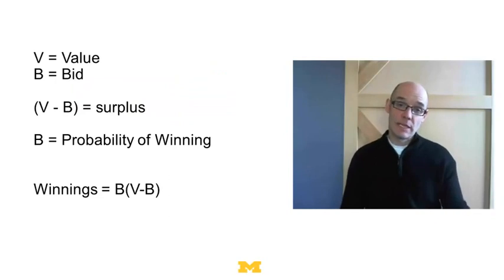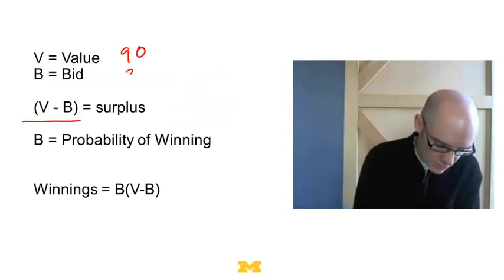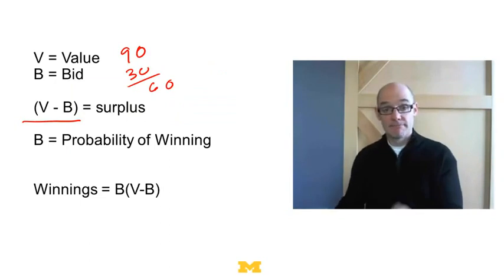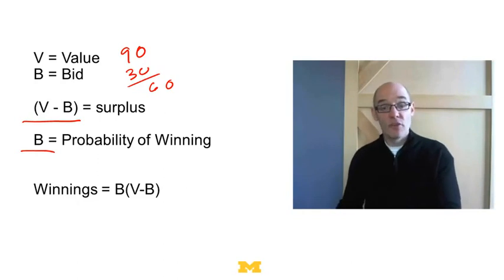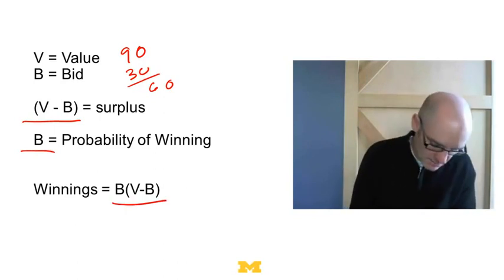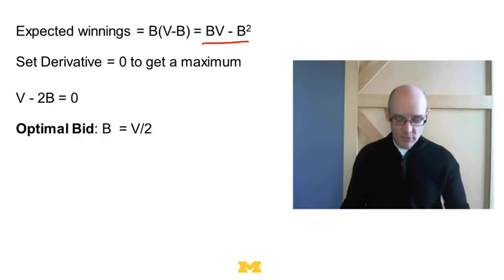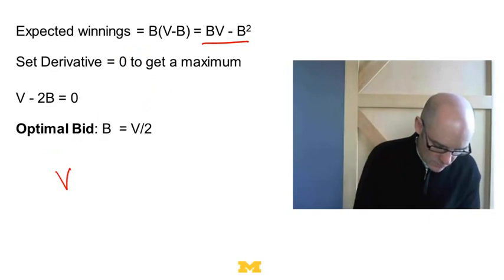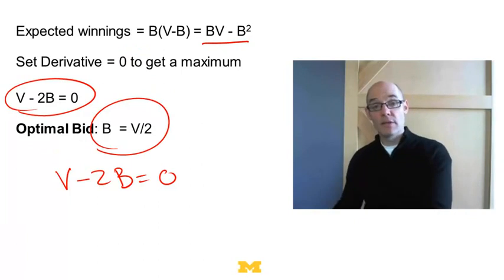Let's formalize a two-bidder model where the other bidder's value is a uniform distribution between zero and one. Suppose the other bidder bids her true value. V is your value, B is your bid. V minus B is your surplus — how much you'd win if you win. B is also your probability of winning. So your expected winnings are B times (V minus B), which equals BV minus B squared. Taking the derivative with respect to B and setting it equal to zero gives V minus 2B = 0, so your optimal bid is V over 2 — half your value.